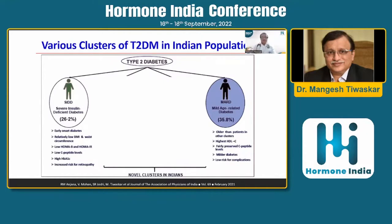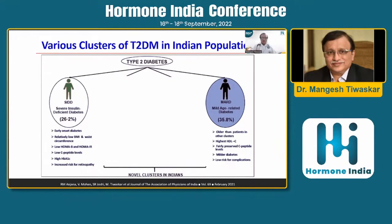Then comes the younger Indian population labeled as Severely Insulin Deficient Type 2 Diabetes, comprising around 26 to 27% — so one in four patients. This means we need to consider insulin deficiency, not just insulin resistance, in type 2 diabetes. These patients present at a very young age, with relatively low BMI and low waist-hip circumference, but have very low beta cell capacity reflected by low fasting and stimulated C-peptide levels, poorly controlled sugars, and are vulnerable to develop nephropathy very early in life.